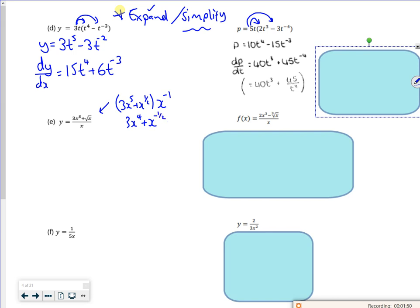The other way of doing it is to split it as two separate fractions. Personally, I think that's nicer, but what hack does it as 3x to the 5 all divided by x plus x to the half all divided by x. So if I take the power of 1 away from it, it'll be 3x to the 4 plus x to the minus 1 half.